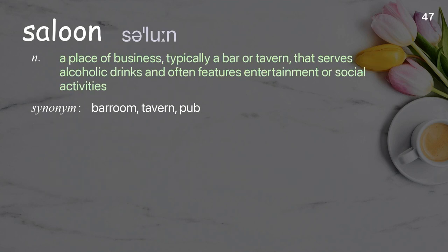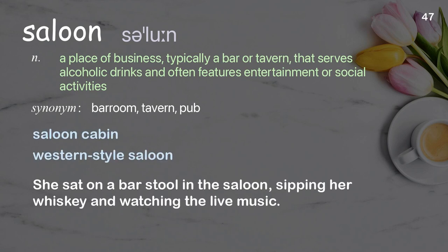Saloon: A place of business, typically a bar or tavern, that serves alcoholic drinks and often features entertainment or social activities. Examples: Saloon cabin, western-style saloon. She sat on a bar stool in the saloon, sipping her whiskey and watching the live music.